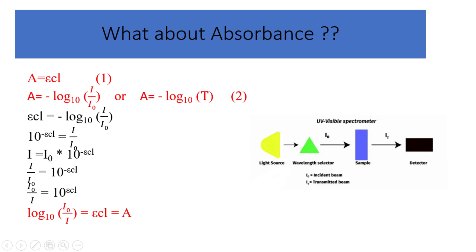If you take the reciprocal, or inverse, of both sides of the equation, you will get that I naught over I equals 10 to the power of epsilon C L. So, the absorbance, A equals log base 10 of the ratio of I naught to I, and also equals epsilon C L.